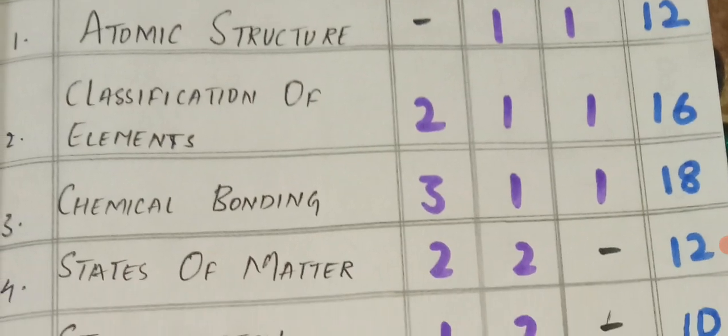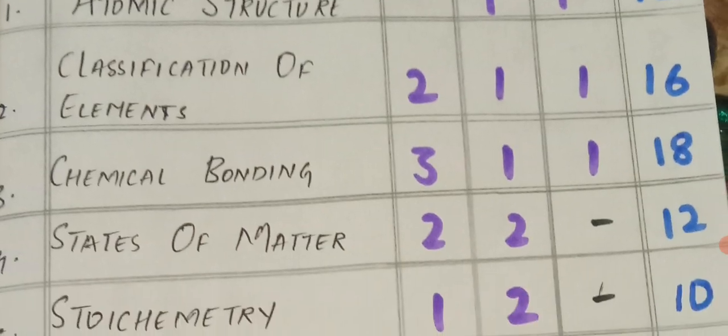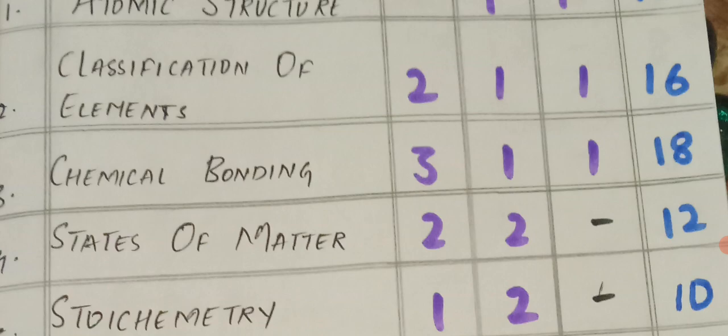Classification of elements: 2 VSAQs, 1 SAQ, and 1 LEQ, total 16 marks. Chemical bonding: 3 VSAQs, 1 SAQ, and 1 LEQ, total 18 marks.